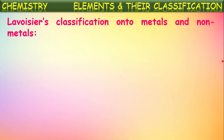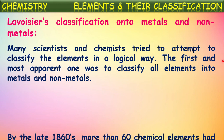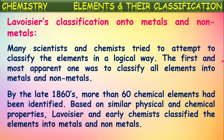One important earlier attempt is Lavoisier's classification into metals and non-metals. Many scientists tried to classify elements in a logical way, and the first and most apparent attempt was to classify all elements into metals and non-metals. By the late 1860s, more than 60 chemical elements had been identified. Based on similar physical and chemical properties, Lavoisier and early chemists classified the elements into metals and non-metals.